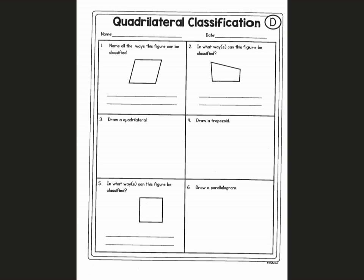Start with quadrilateral — I know it's a quadrilateral because it has four sides. Next is trapezoid. I know it's not a trapezoid because it has more than one pair of parallel sides — it has two, which makes it a parallelogram. This would be considered a rhombus because it has four congruent sides. This would not be considered a square because it does not have four right angles.